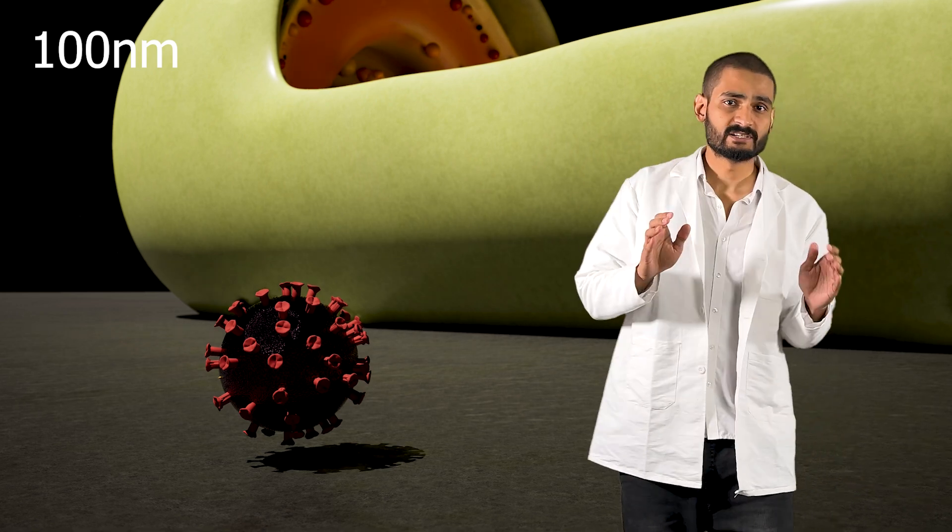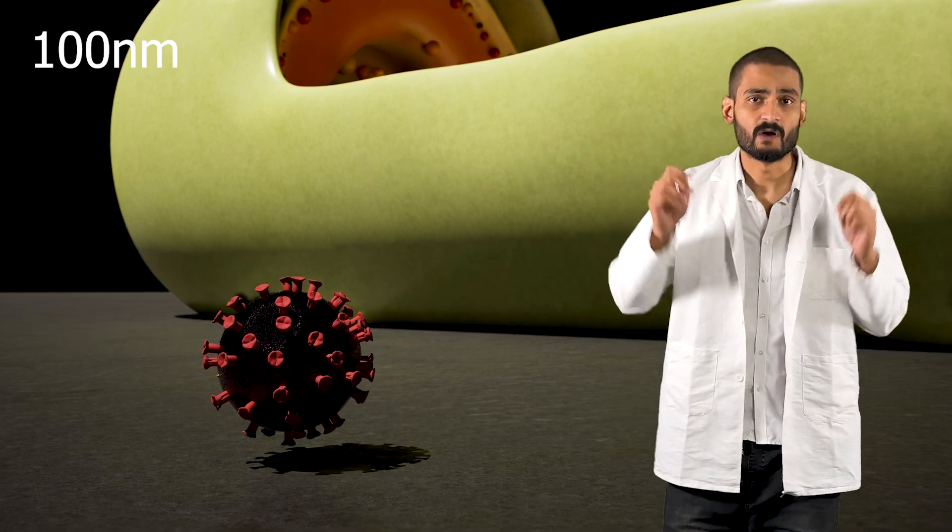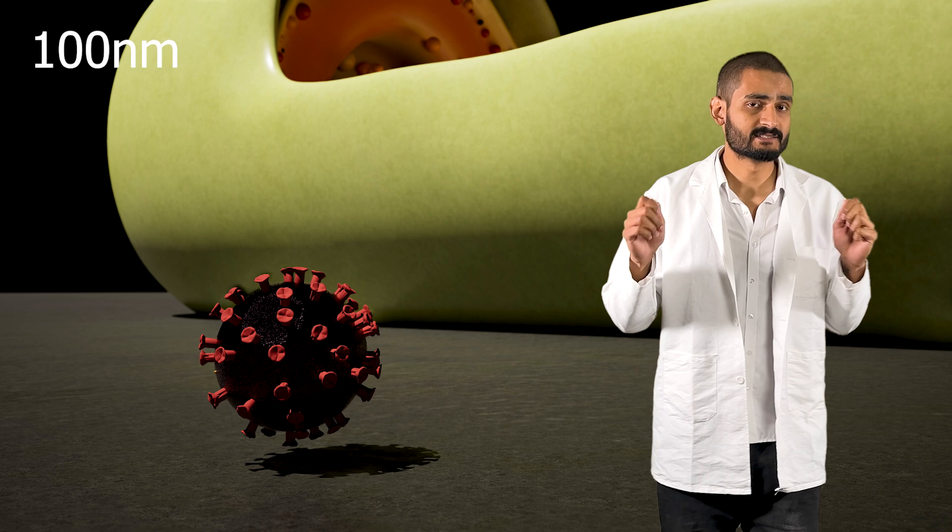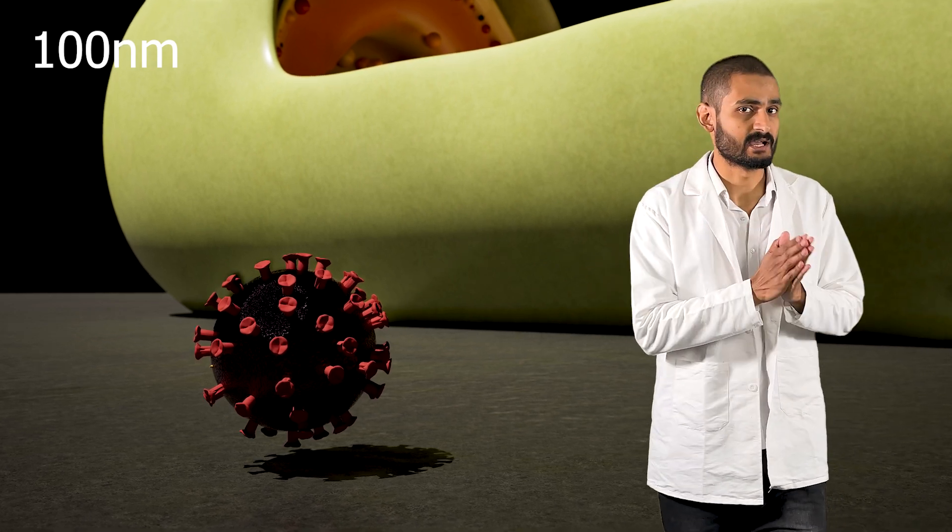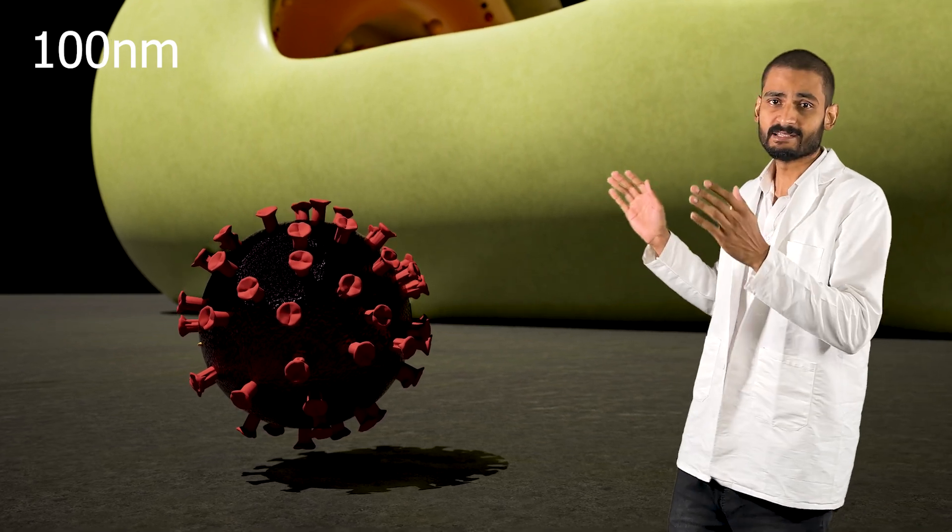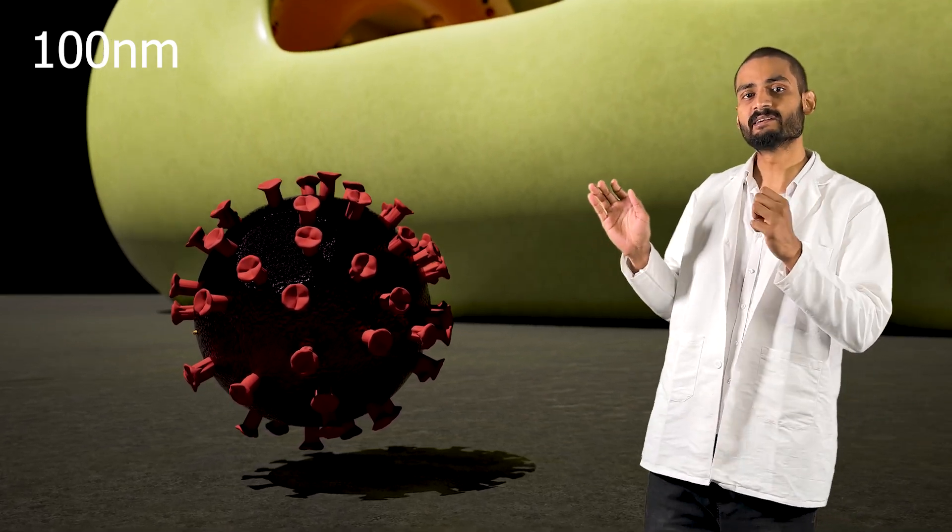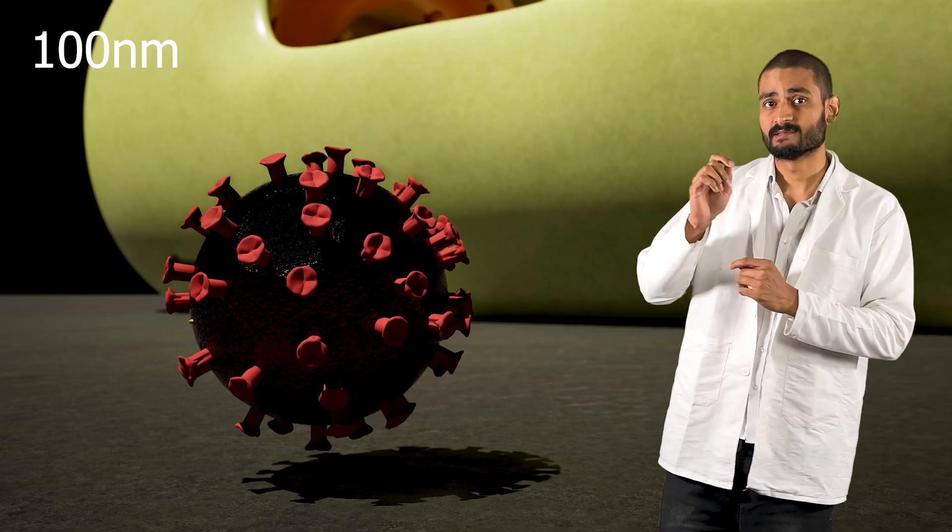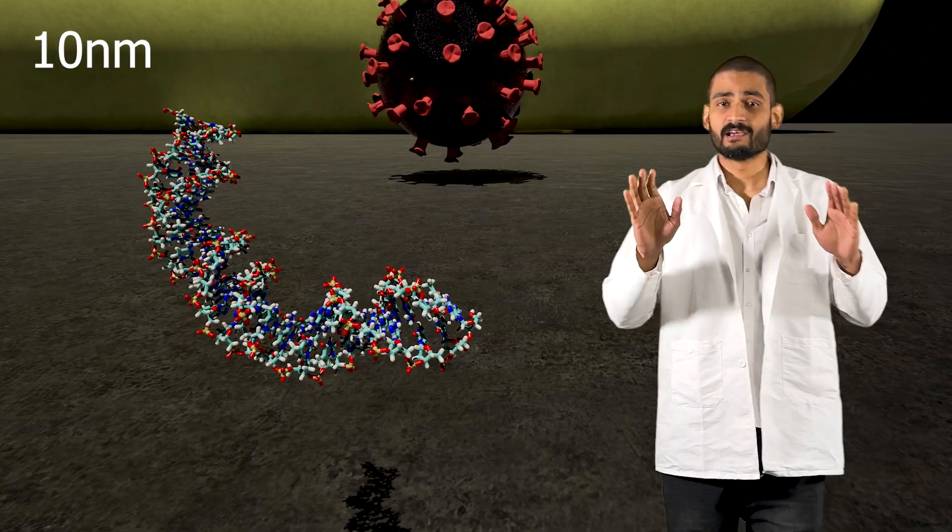At 100 nanometers, we enter the realm of viruses. Most of the viruses that we see come in this range at about 20 to 200 nanometers. The HIV virus that you can see right here is about 120 nanometers, smaller than the red blood cell.